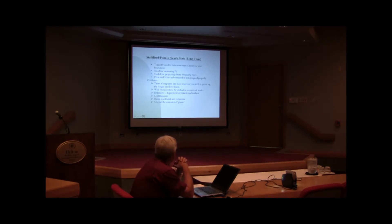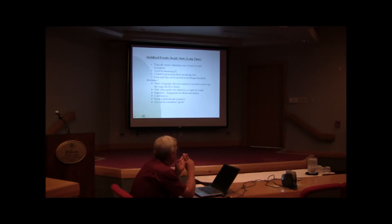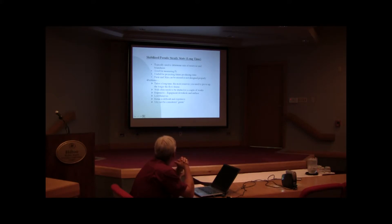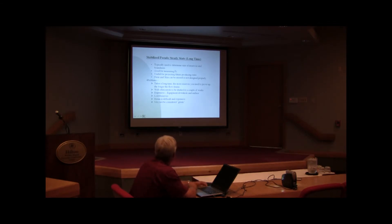It's the most useful tool for determining future production rates because, like the transient test, you get permeability and skin, but you're also going to prove up a certain size of the reservoir. So you can prove up at least a minimum size, so you know how it's going to deplete and what rates you can expect. However, permeability and skin can be missed if the test is not designed properly — they come very early in the test period, and if you don't have enough data points there, you can skip over it.